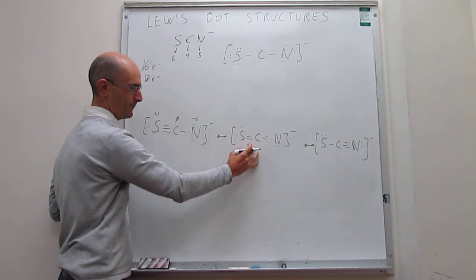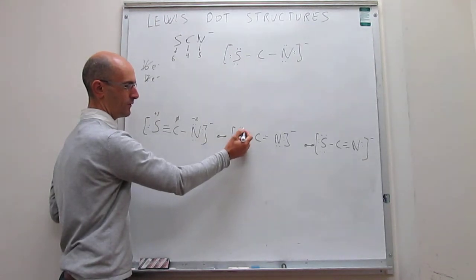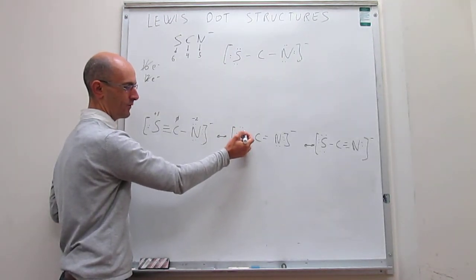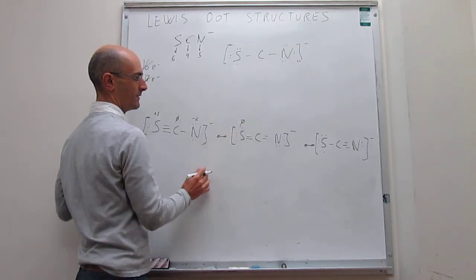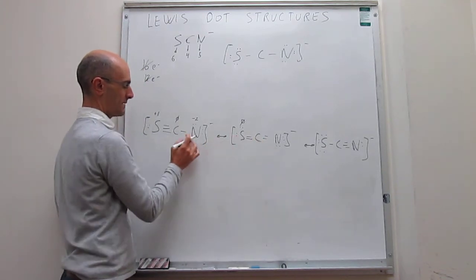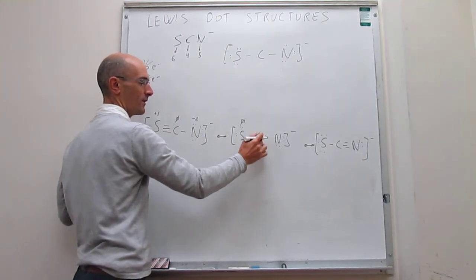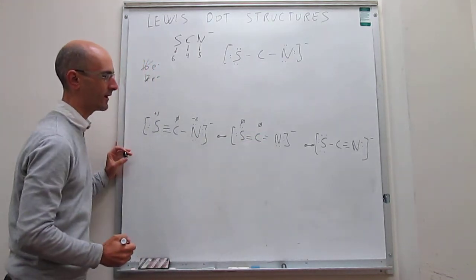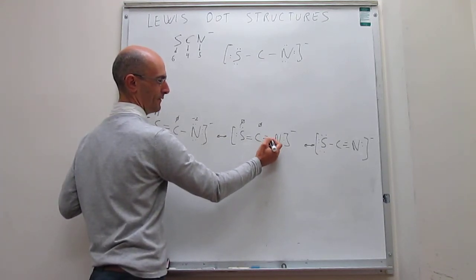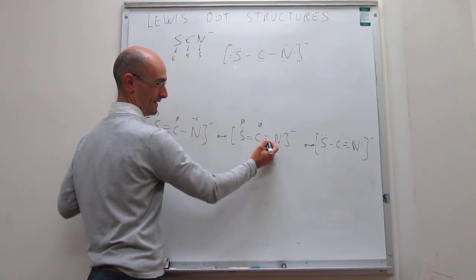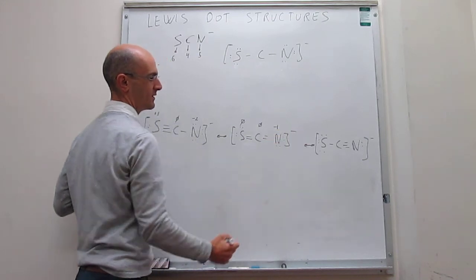For the second resonance structure — with double bonds to both sulfur and nitrogen — sulfur has two, four, and then half of four, so six electrons. There are six in the valence, so sulfur has a formal charge of zero. Carbon, as before, has four bonds and no lone pairs, giving four electrons — formal charge of zero. For nitrogen, you have two, four, and then half of four, so six electrons, which is one more than the five in the valence — a formal charge of minus one.